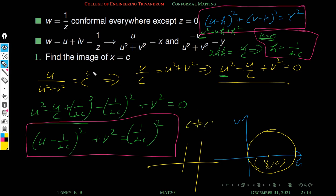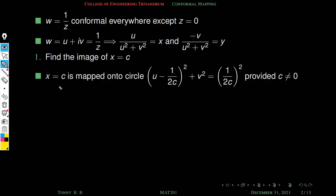If c = 0, then x = 0 maps to u = 0, which is the imaginary axis in the w-plane. For c ≠ 0, such straight lines are transformed to circles. For example, x = 2 gives radius 1/(2·2) = 1/4 = 0.25, and center also at 0.25.